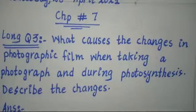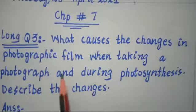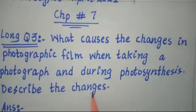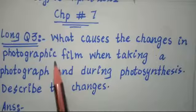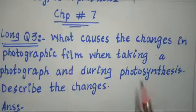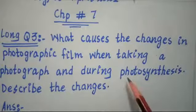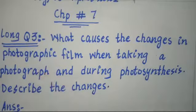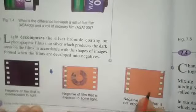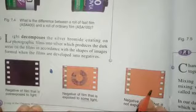Extensive question number 3: What causes the changes in photographic film when taking a photograph, and during photosynthesis describe the changes? You have to know what changes happen when we expose light to photosynthesis. The answer to question number 3 is on page number 78 and the topic is 7.3 — Changes Caused by Light.